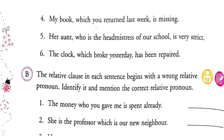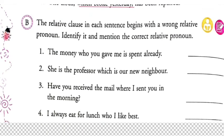'My book which you returned last week is missing' — 'which you returned last week' is the relative clause; 'my book is missing' is the main clause. 'Who is the headmistress of our school' and 'which broke yesterday' are also relative clauses. The relative clause comes after the noun and relates it to the remaining part of the sentence.